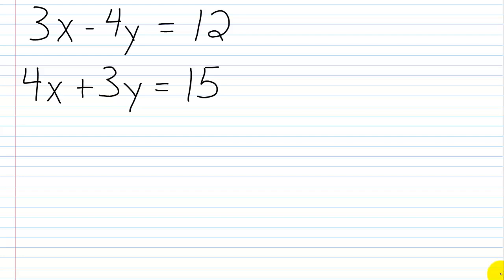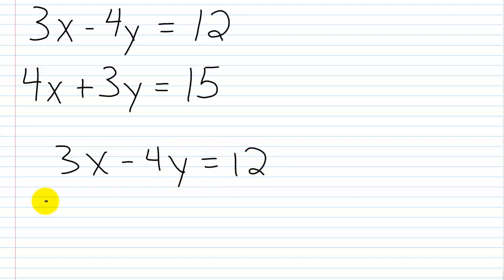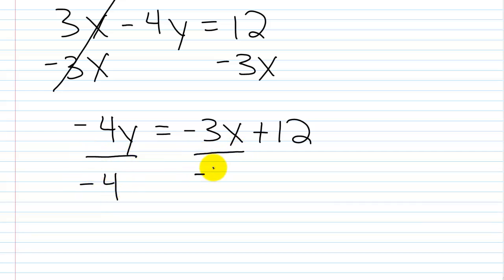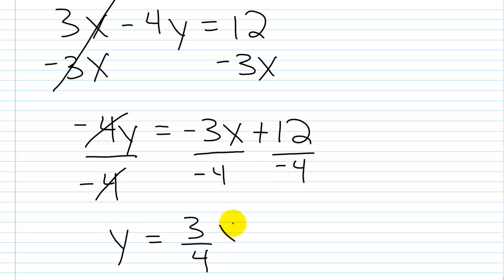For our final problem, we have 3x minus 4y equals 12 and 4x plus 3y equals 15. We're going to solve each for y to get slope-intercept form, then look at our slopes to determine if the lines are parallel, perpendicular, or neither. Starting with 3x minus 4y equals 12: subtract 3x from both sides, giving negative 4y equals negative 3x plus 12. Dividing each part by negative 4: negative 3 over negative 4 is positive 3/4, and 12 over negative 4 is negative 3. So y equals 3/4 x minus 3.